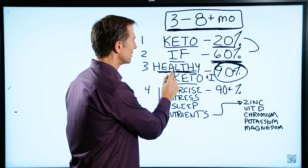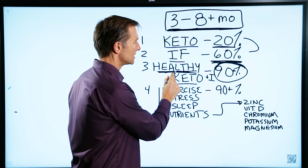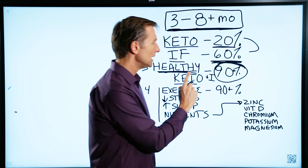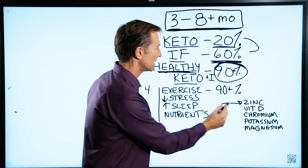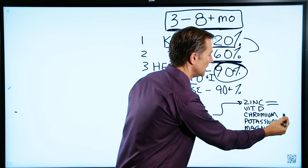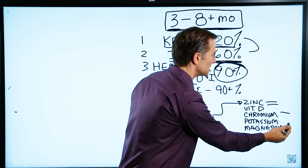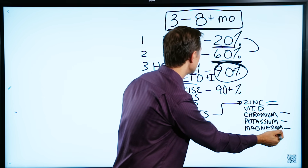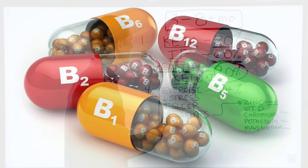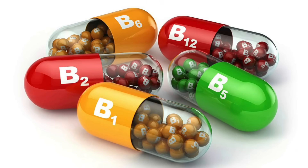The healthy version of keto itself supplies the key nutrients — zinc, vitamin D, chromium, potassium, magnesium, the B vitamins — to help speed up the process.